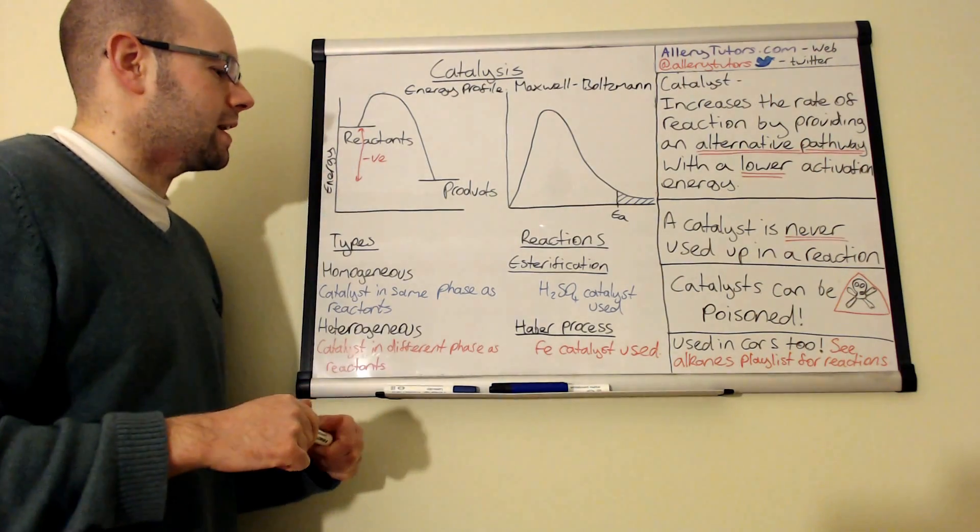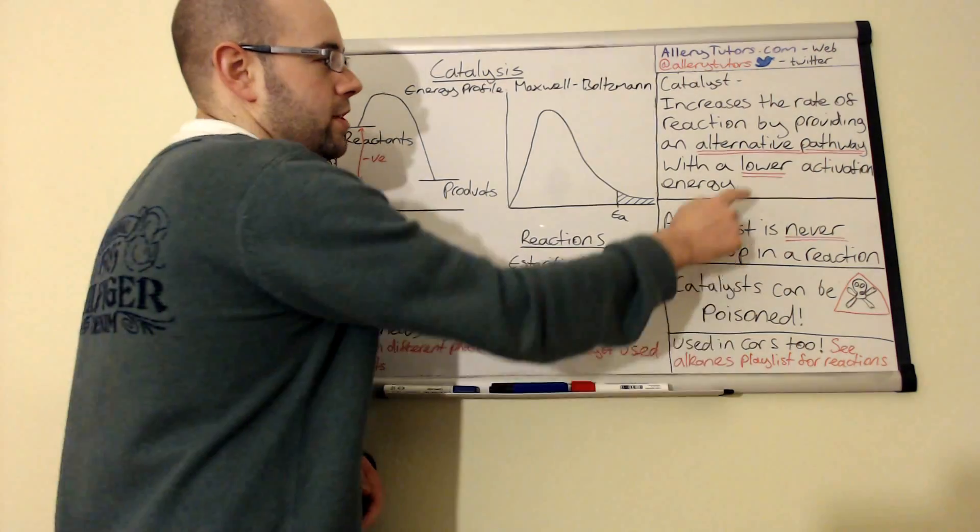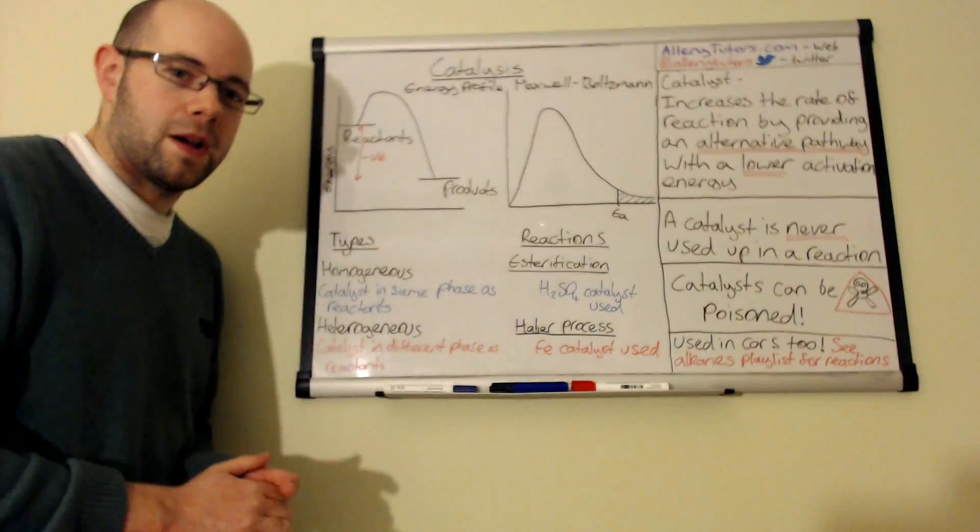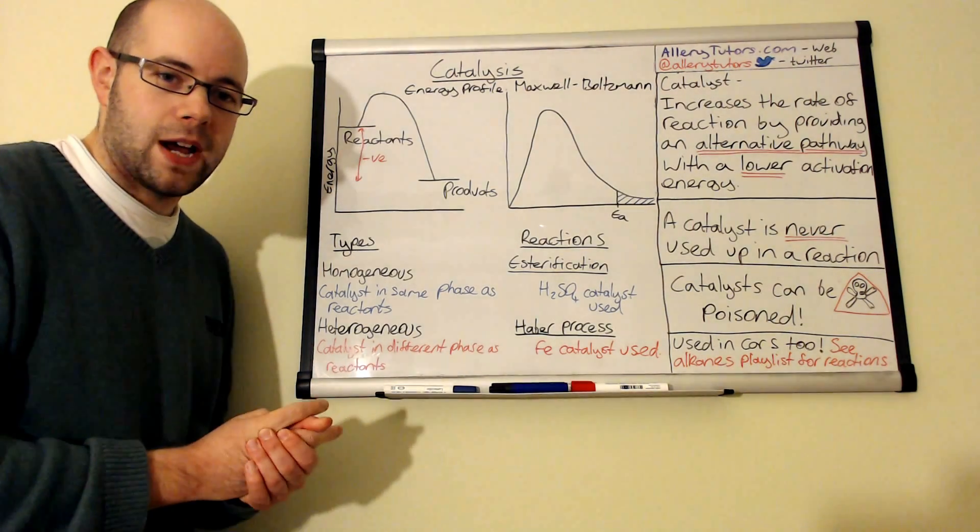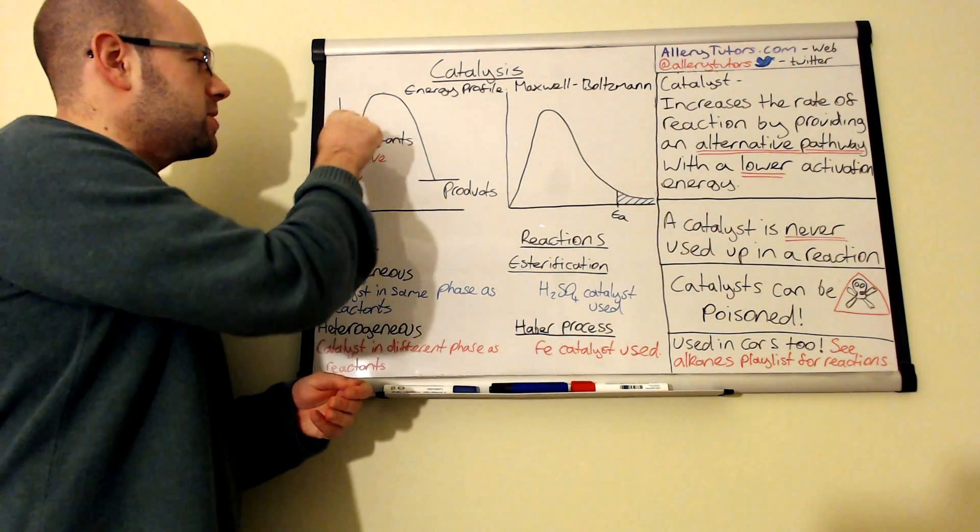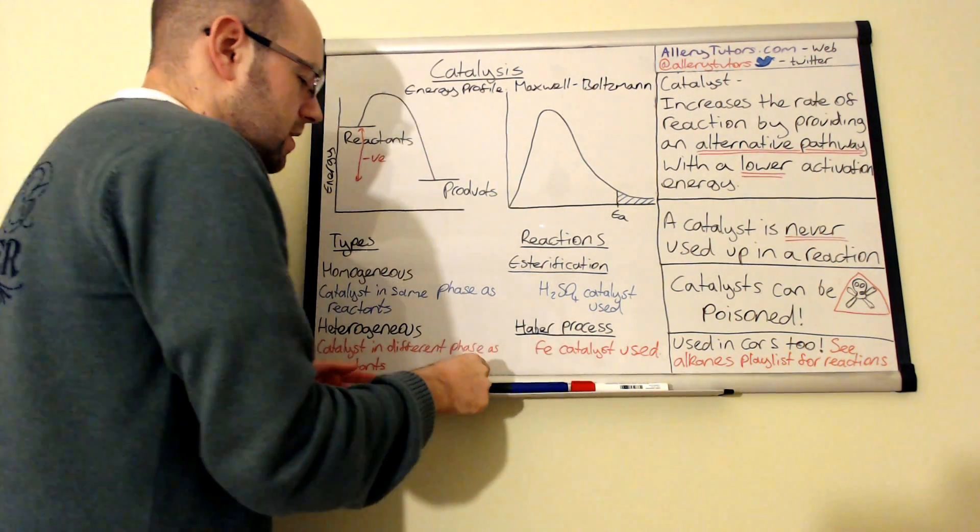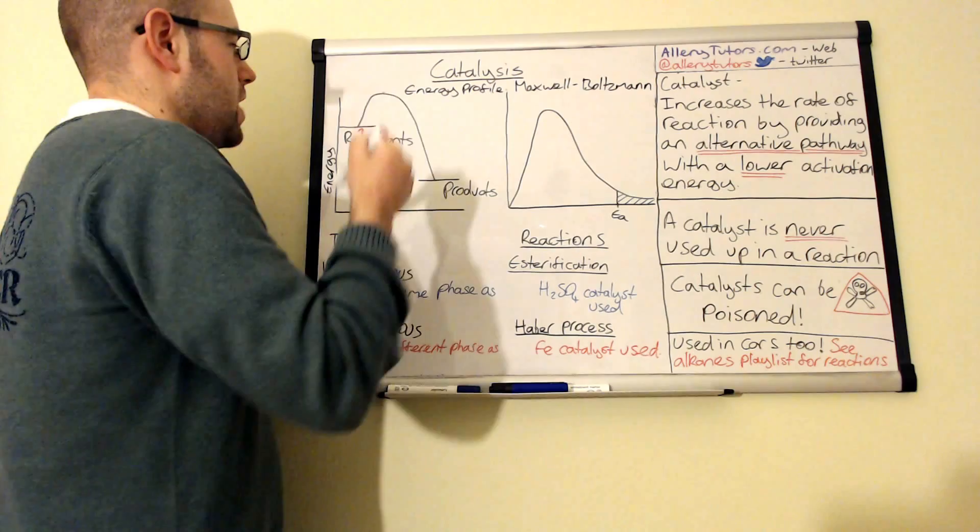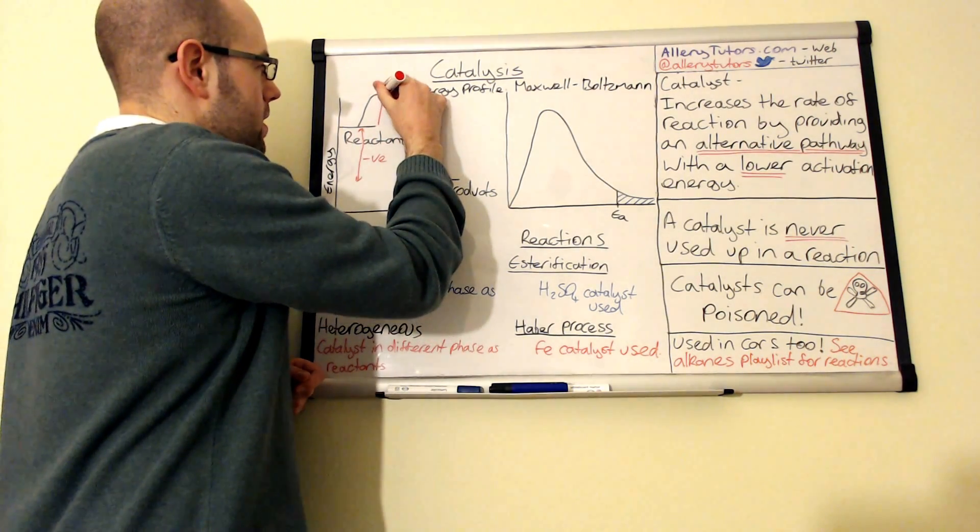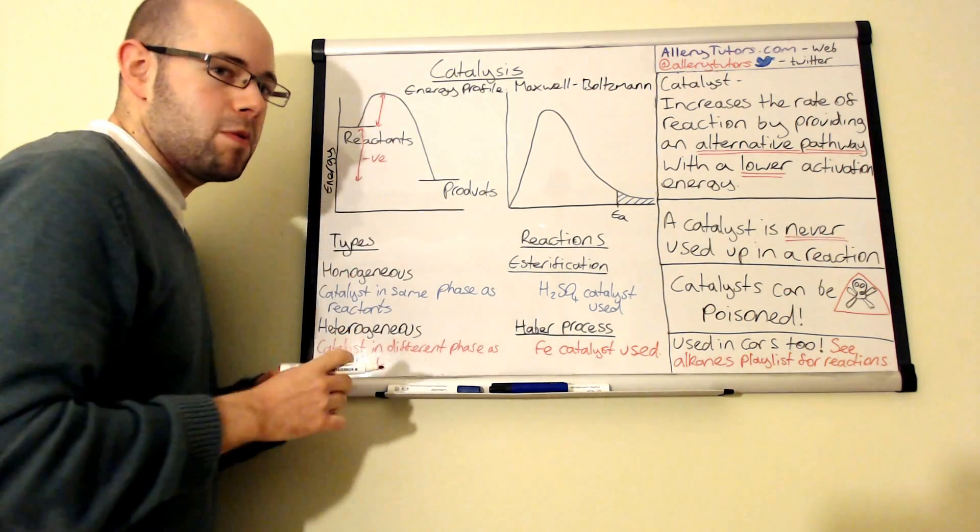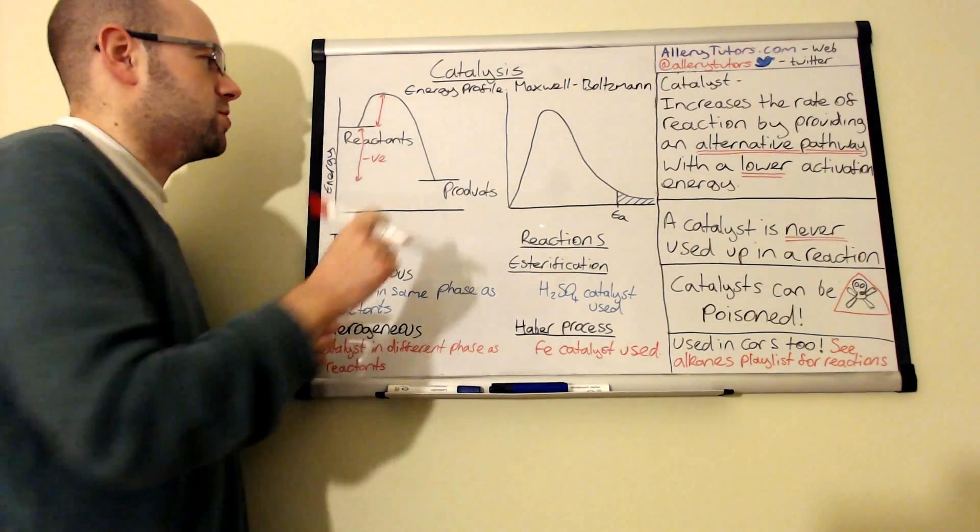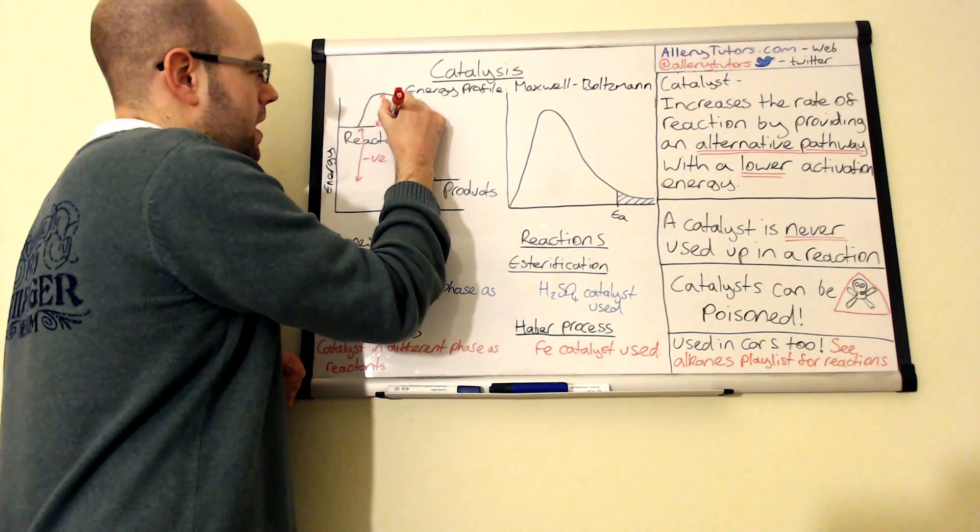If we add a catalyst to this, the catalyst will actually lower the activation energy by providing the reaction with an alternative reaction pathway. You can see here that this is the energy profile, and this bit here is called the activation energy. This is the amount of energy, or the minimum amount of energy, required for a reaction to occur. I'm going to put that there as EA.